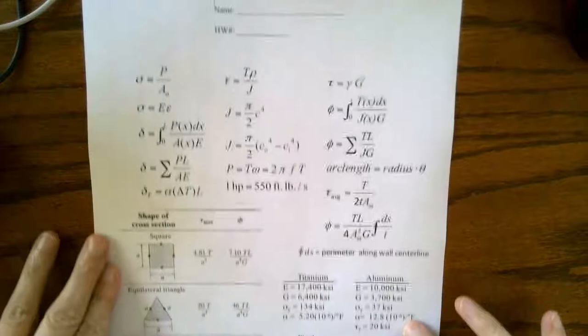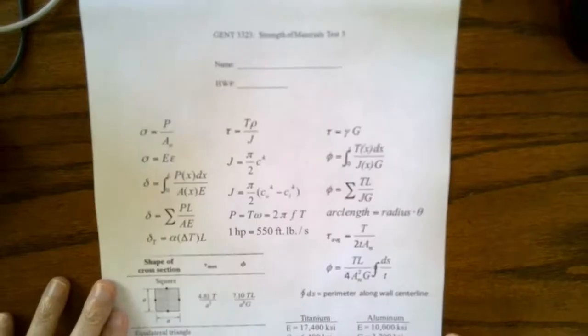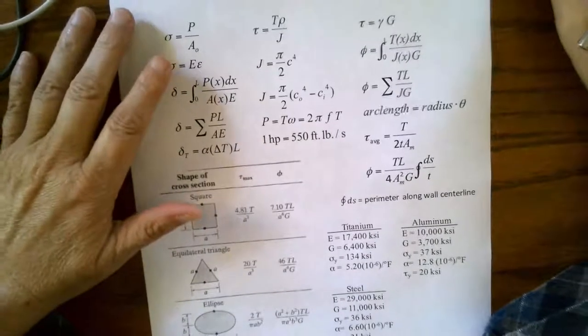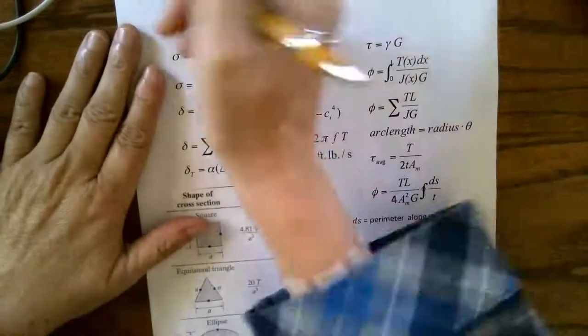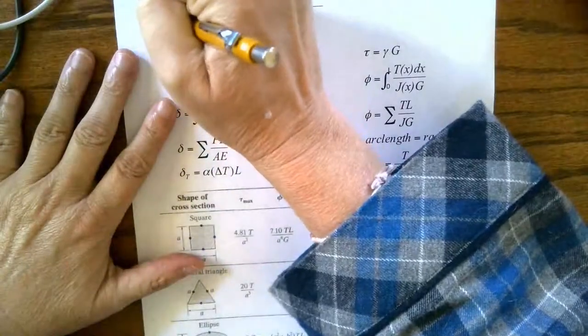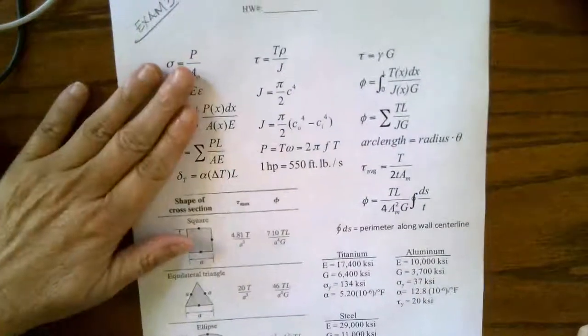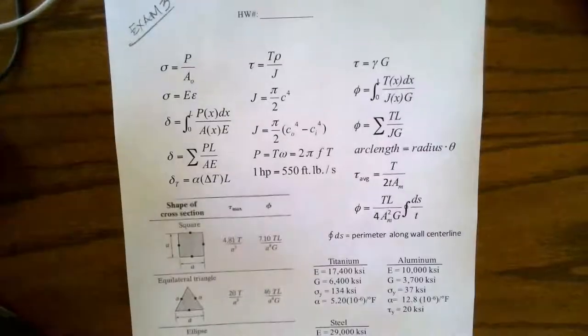Okay, so the first thing I want to do is an equation sheet review for exam number three. On exam number three, I told you all in class on Friday that the first thing I would do is make sure I actually understood the equations because you can't work the exam if you don't know the difference between what these equations are saying.